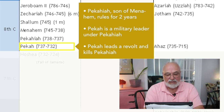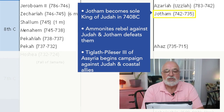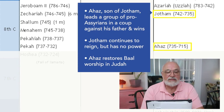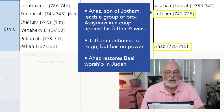In 740 BC, Jotham becomes the sole king of Judah. The Ammonites rebel against Judah but Jotham defeats them. Tiglath-Pileser III of Assyria begins a campaign against Judah and the coastal allies. Ahaz, son of Jotham, leads a group of pro-Assyrians against his father in a coup and wins. Though Jotham rules a few more years, his power is essentially gone. Ahaz restores Baal worship in Judah.